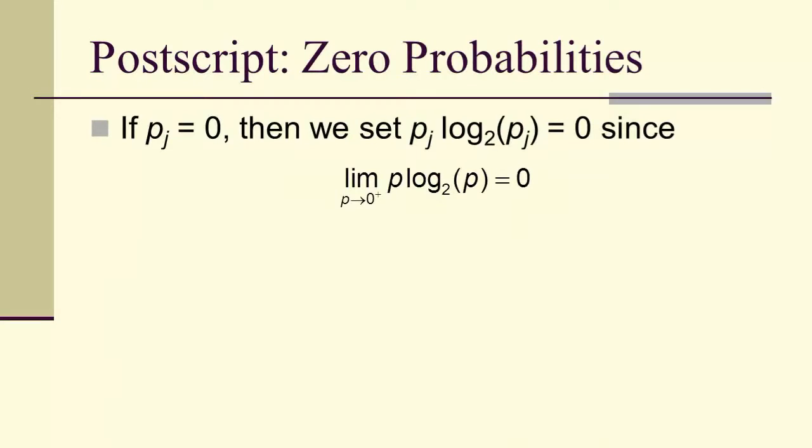So let me mention zero probabilities. The limit, as p goes to zero from the right, of p log base 2 of p is zero. So if we have a zero probability, then we set that to zero.